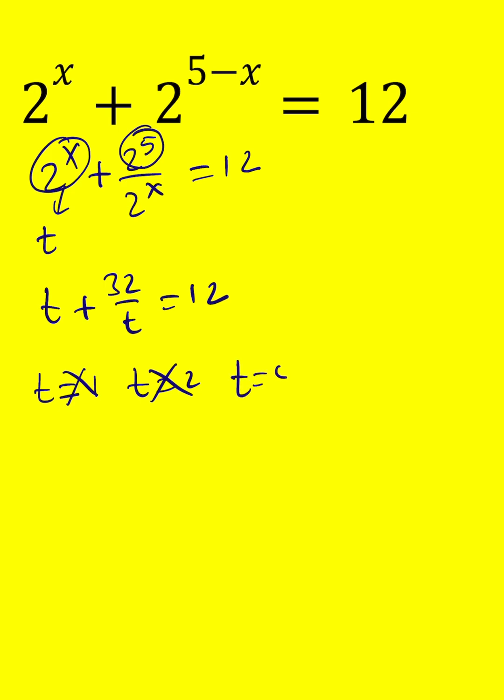t equals 4 is probably going to work because look at this: 4 plus 8 is equal to 12. So t equals 4 is one of the solutions. But is that the only solution? Probably not. If t equals 4 works, t equals 8 will also work because 8 plus 4 is also 12.